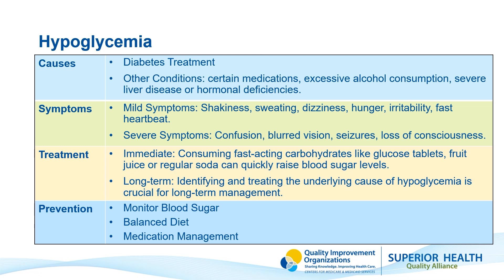Mild symptoms of hypoglycemia include shakiness, sweating, and hunger. More severe symptoms include confusion, blurred vision, seizures, and loss of consciousness. The best and quickest way to treat it is to take something high in sugar, such as fruit juice or soda pop. This immediate treatment will quickly elevate your sugar levels.